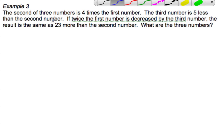The third number is five less than the second number, so let's get three numbers. Let's say we have A, B, and C - here's the first, the second, and the third.